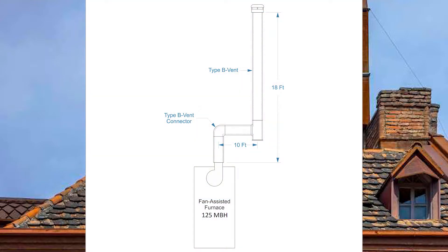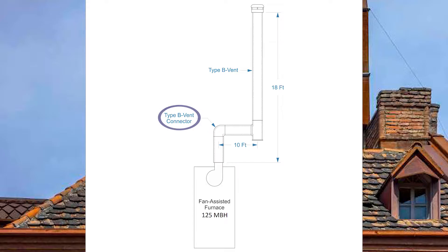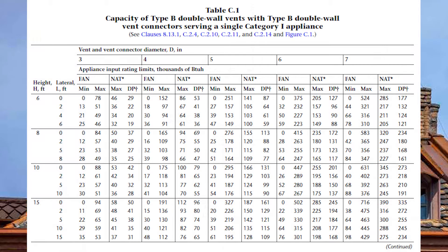The easiest way to do this is to go through an example. I have a 125,000 BTU fan-assisted furnace with a 10-foot vent connector lateral and the vent itself is 18 feet tall. Both the vent and vent connector are double wall or B vent. When we turn to Table C1 to size this up, we very quickly notice there is no 18-foot vent height designation.